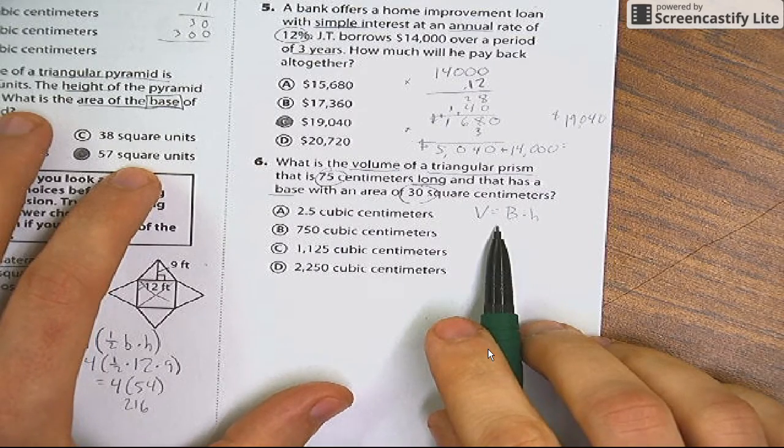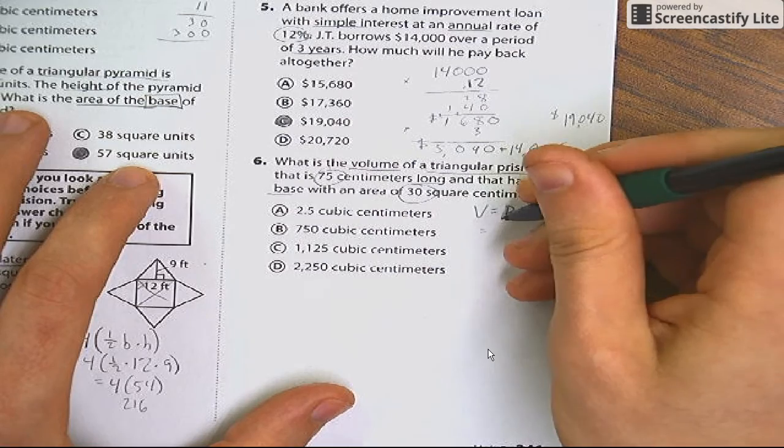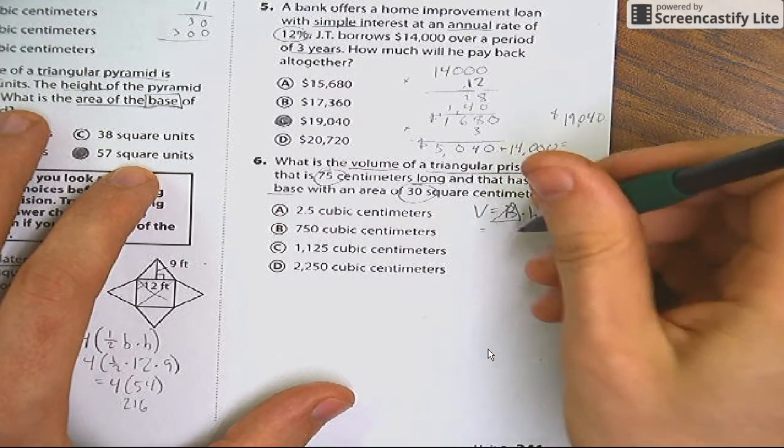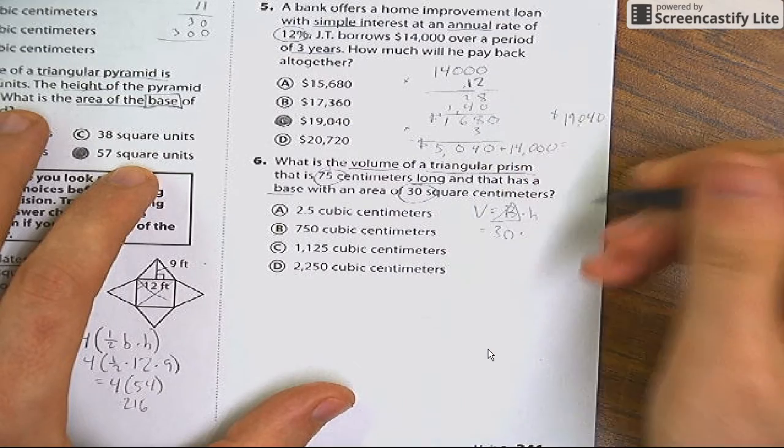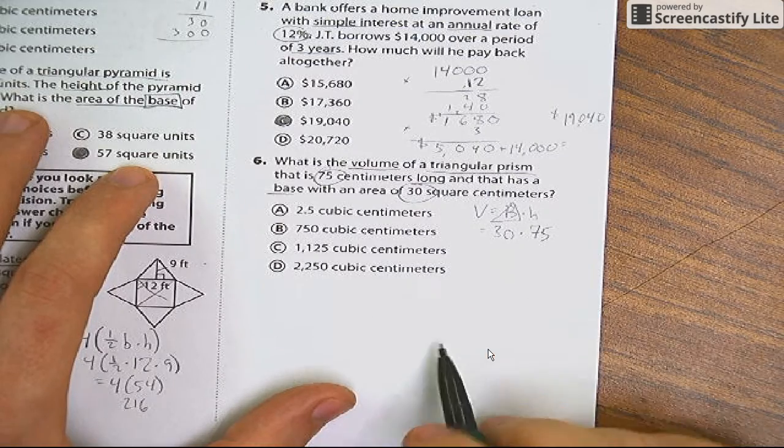Okay. Well, it's all given to me. I don't have the volume, but I am given the area of the base, which is a triangle. It tells me that the area of the base is 30. I am given the height, 75. So if I just multiply those together, I'll get the answer.